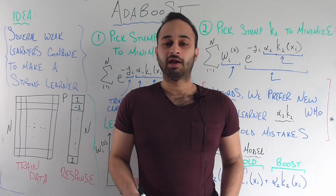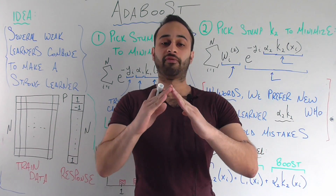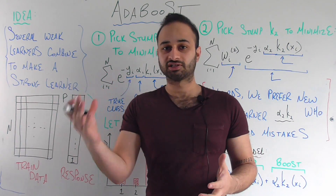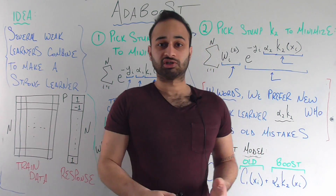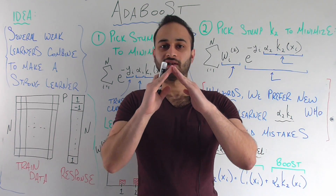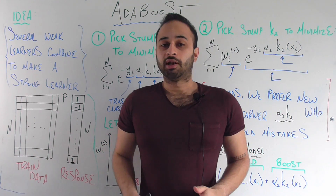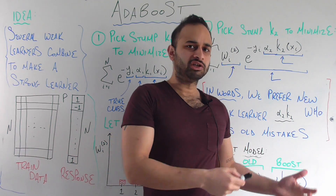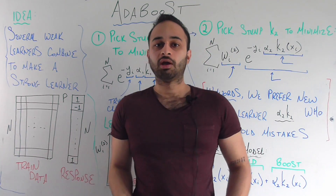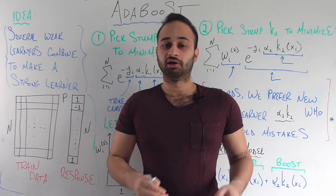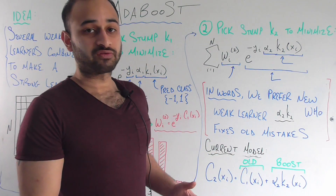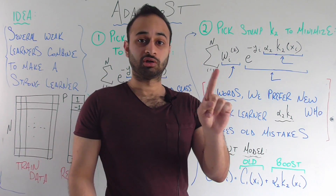The reason it's called a decision stump is that we just pick one feature, one predictor from these p, and that's the end of the model. We just split on that one feature, and whatever gets classified as one or negative one determines whether the student gets into their top choice medical school. This is called a decision stump — just a one level decision tree. Now we're going to be smart about it at each point, picking the best decision stump possible. And we need to organize some kind of loss function in order to know what best means.